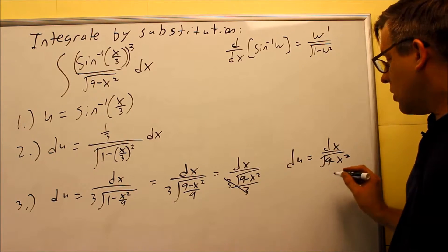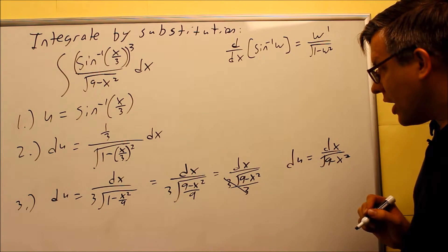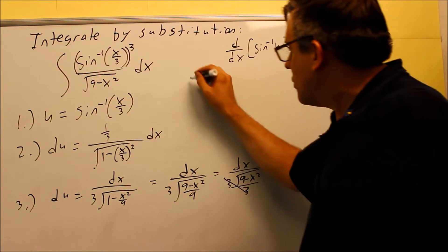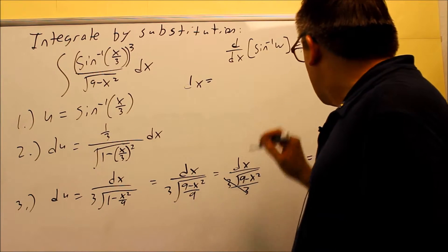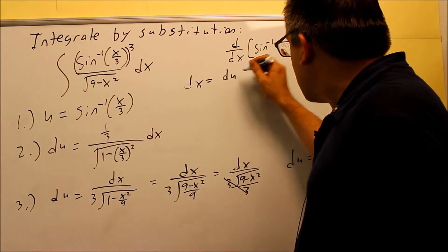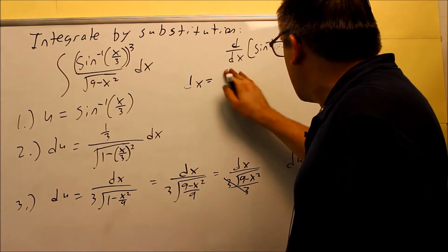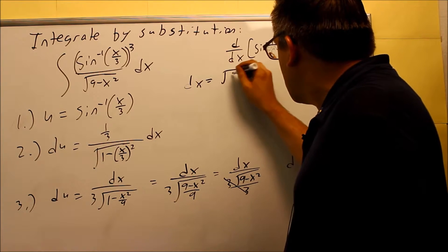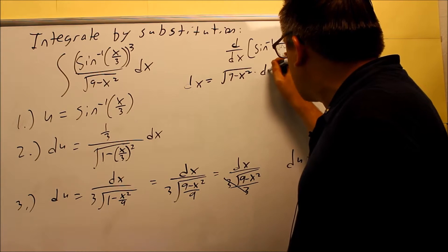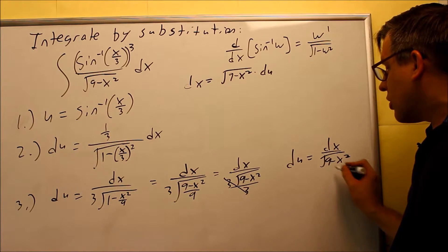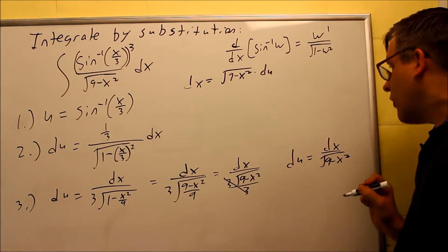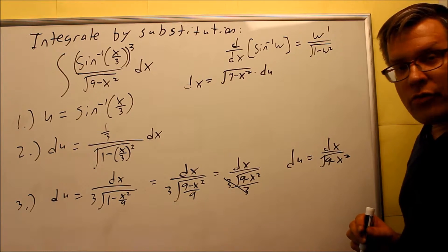Now if I cross multiply and solve for dx, what I'm going to end up getting for dx is dx is equal to du times the square root of 9 minus x squared. So I'll put the square root part first, 9 minus x squared, and then all that's going to be times du. So I basically cross multiply here and solve, and that's what I get for dx.